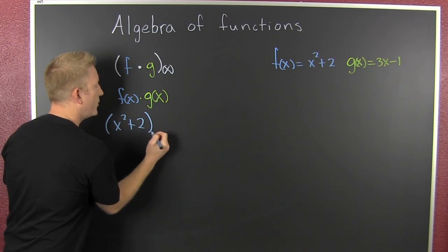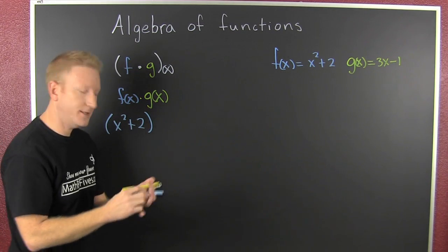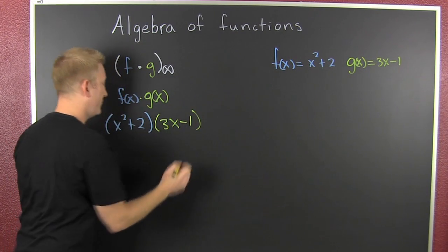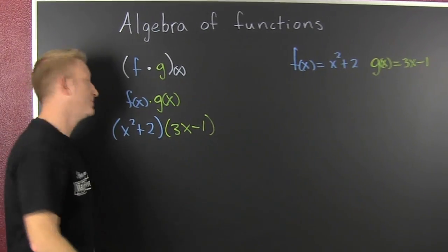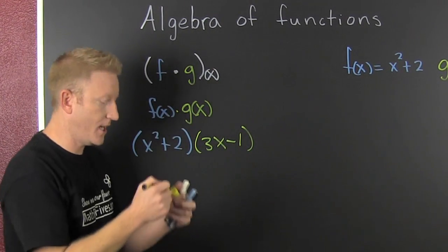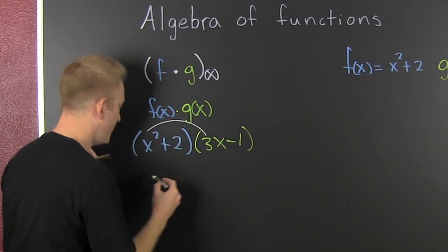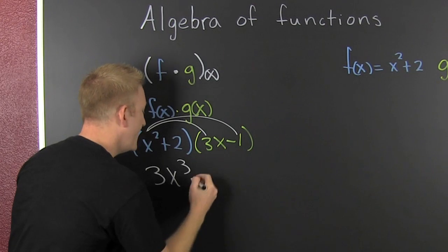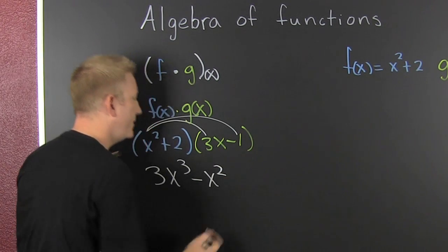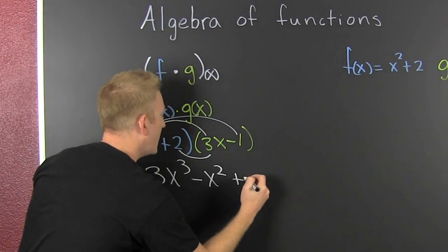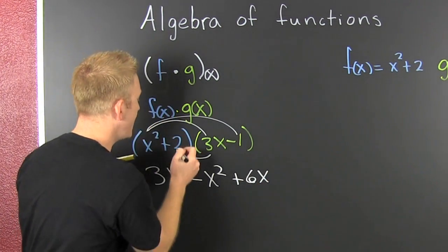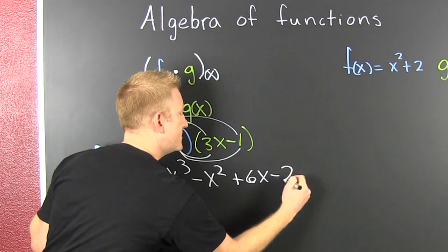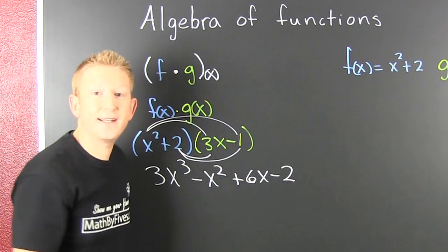Everywhere you see an f, you're gonna put an x² + 2. I see g, so I put 3x - 1. And now what? First, inner, outer, last—FOIL. So we go first: that's a 3x³. Then we outer: that's a -x². And then we inner: +6x. What comes next? Last: -2. And then you would gather, collect, and combine.